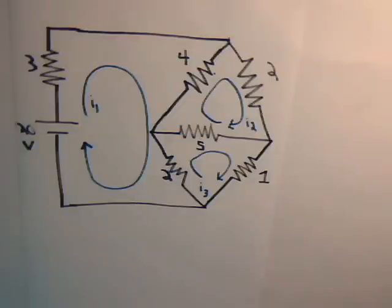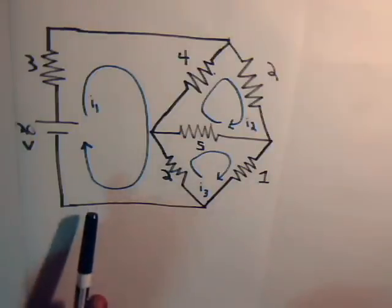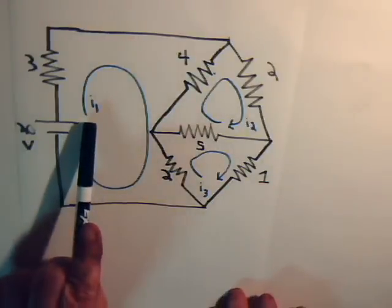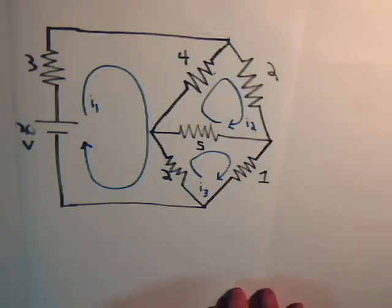In our last video, we were analyzing this circuit here, and thus far we had determined what current I1 is equal to, that is plus 4 volts, mesh current I1.